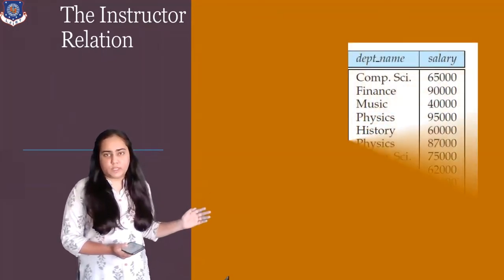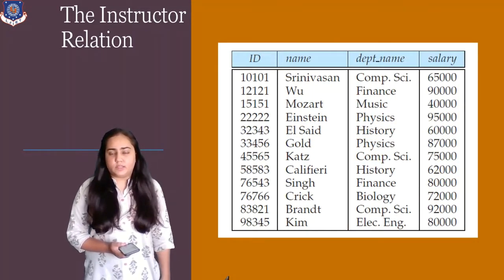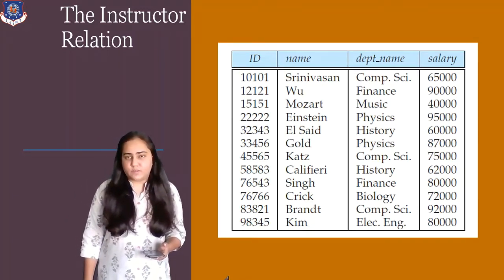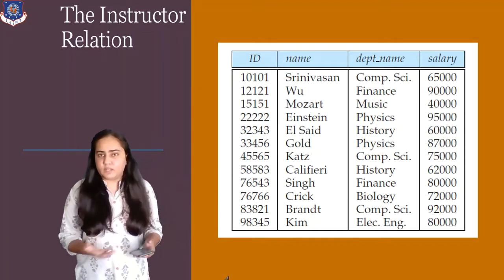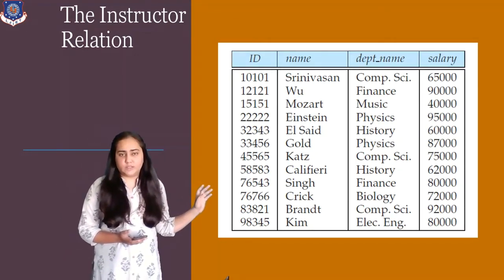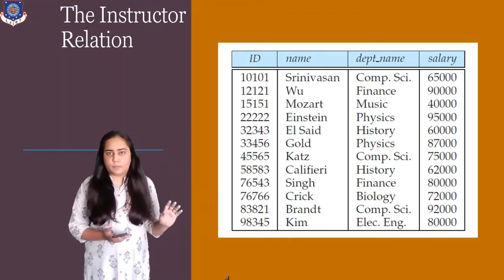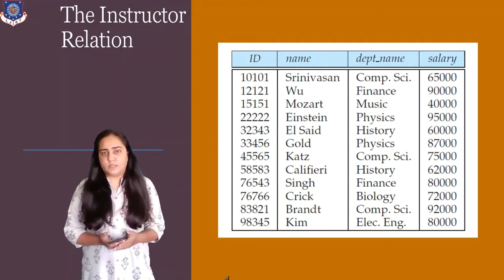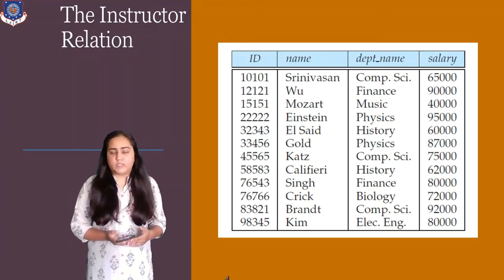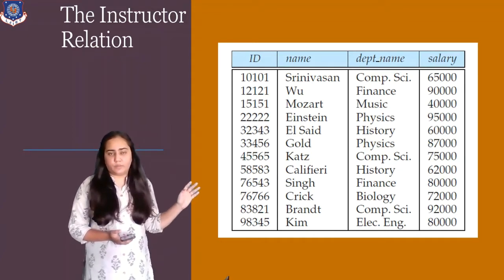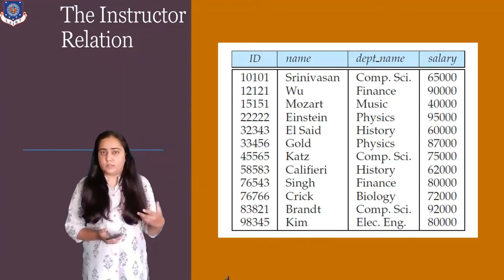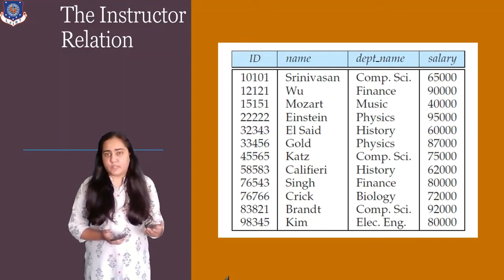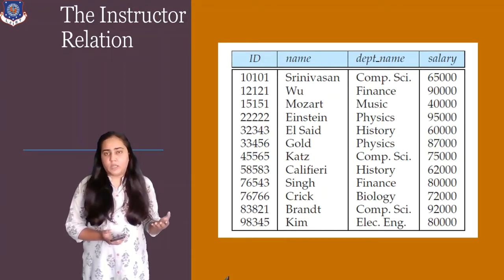Consider this relation that you would see if you wrote a simple query: SELECT * FROM instructors. This gives you the names of all the instructors in the form of a table with rows and columns. But when this table is actually stored in secondary memory, it is not stored in the form of rows and columns — it is stored in the form of blocks, which have to be fetched one by one into main memory.